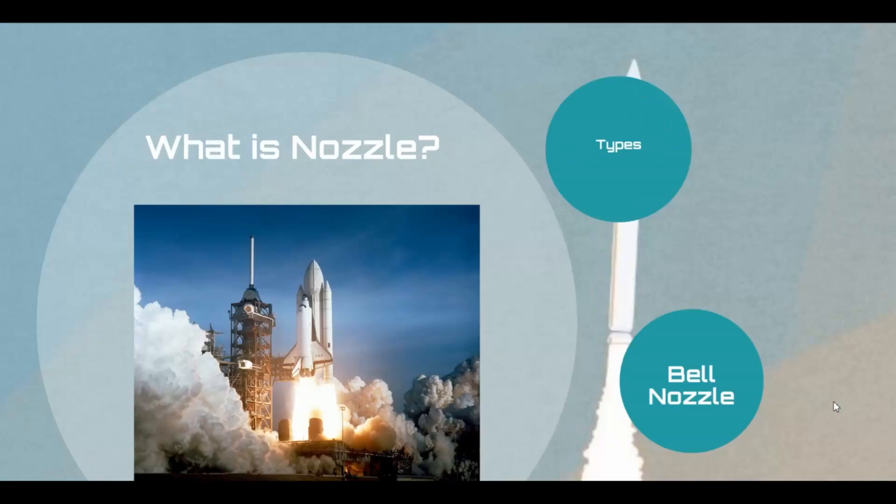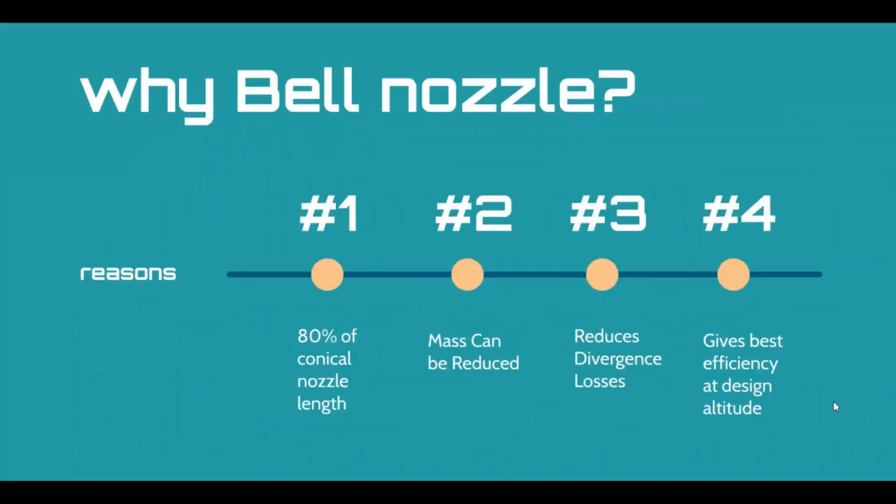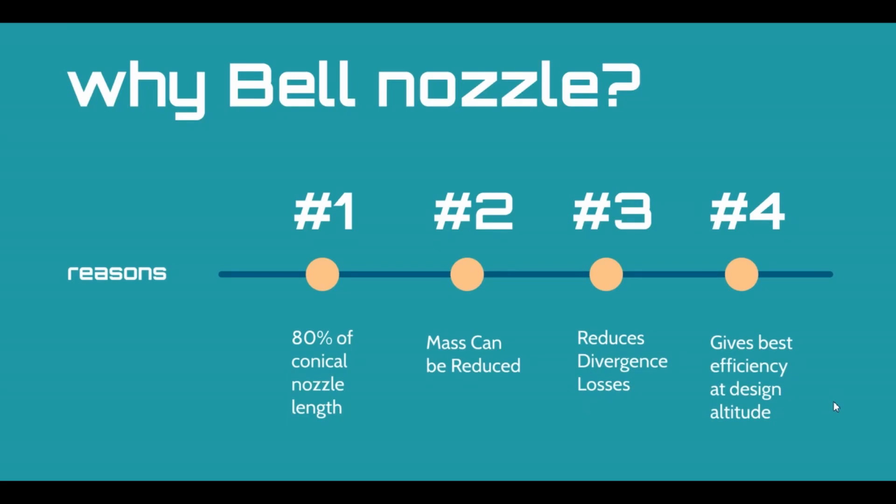Based on the usage, we select one. Bell nozzle is popular because wherever you see a launch vehicle, you can find a bell nozzle there. It is more efficient than a conical nozzle. You can reduce the length of the nozzle. 80% of the length of the conical nozzle would be equal to the bell nozzle. And it is very prominent that bell nozzle reduces the divergent losses, which is very useful for a spacecraft.